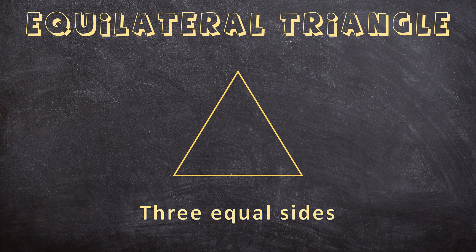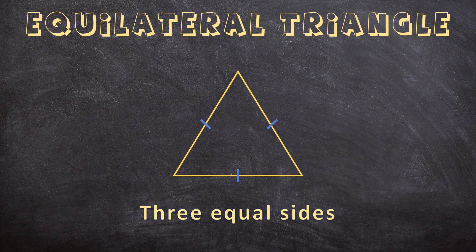For another example, when this side is 45 mm, this side will also be 45 mm and this side will also be 45 mm. But there is another way we can indicate that this is an equilateral triangle without giving the exact measurements — when we use this symbol: one stripe on each side, this means that all the sides are equal in length.